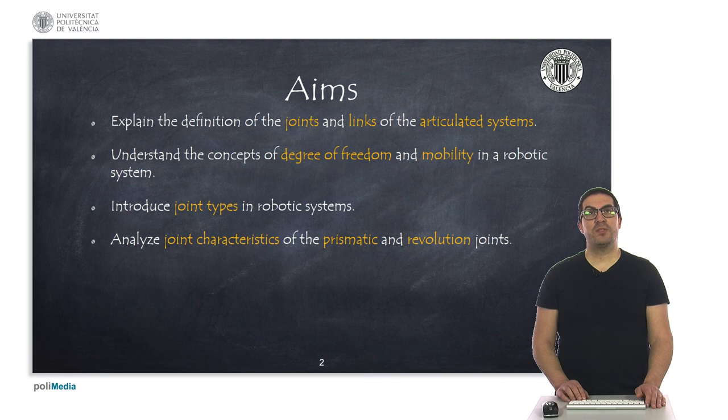The aims of the presentation are to formally define joints and links of an articulated system. In addition to this I will explain concepts such as the degrees of freedom and their mobility. Later I will explain the most common joint types used in robotic systems and analyze the most important ones such as prismatic and revolute joints.